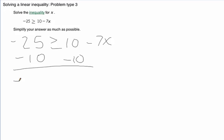Over on this side, we get negative 35. It's still going to be greater than or equal to. These cancel each other out and we're left with negative 7x. Don't lose track of that sign.